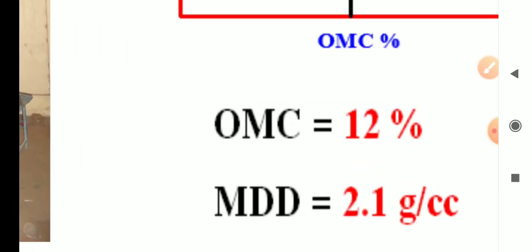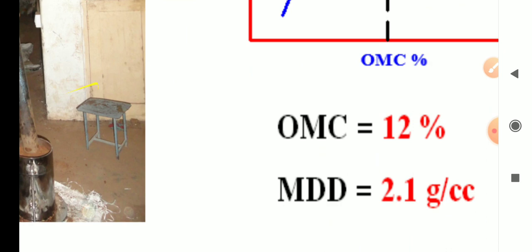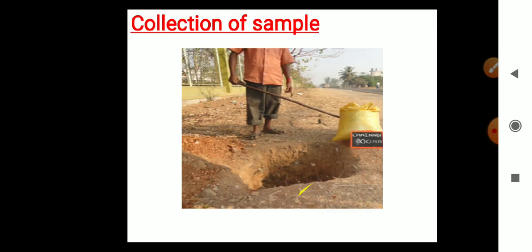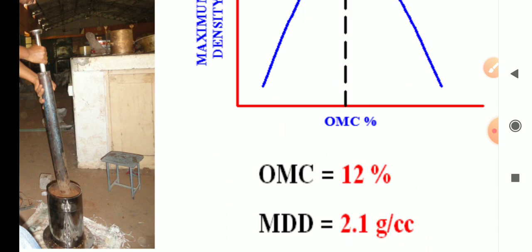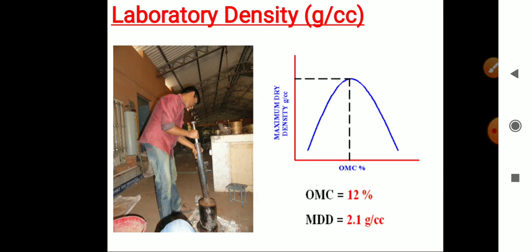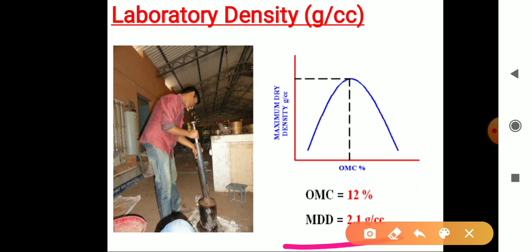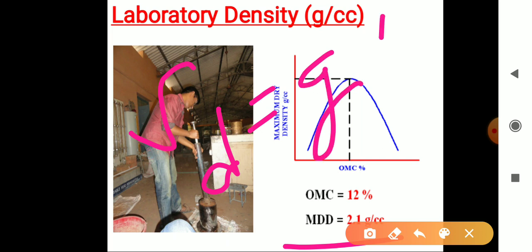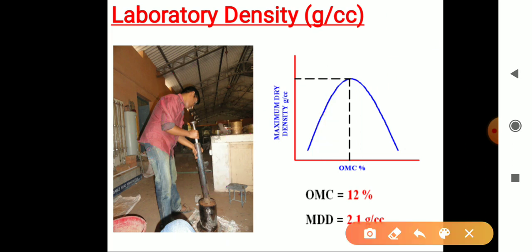For example, assuming we get OMC equal to 12 percent and MDD equal to 2.1 gram per centimeter cube. This is called maximum dry density because we used oven-dry soil. We are getting dry density, not bulk density — the dry density is 2.1 g/cc.